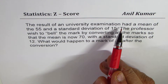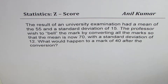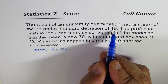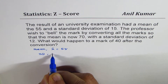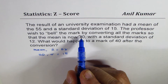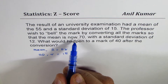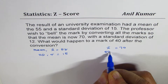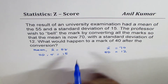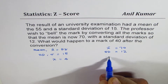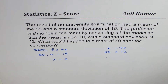The result of a university examination had a mean of 55 and standard deviation of 15. The professor wished to scale the marks by converting all marks to a new distribution with mean of 70 and standard deviation of 12. What would happen to a mark of 40? You can pause the video, answer the question, and then look at my suggestion.